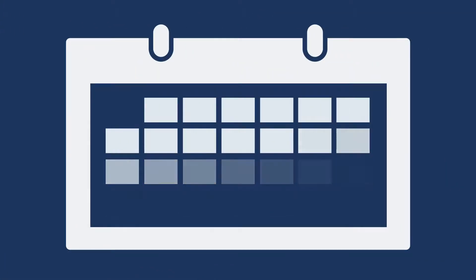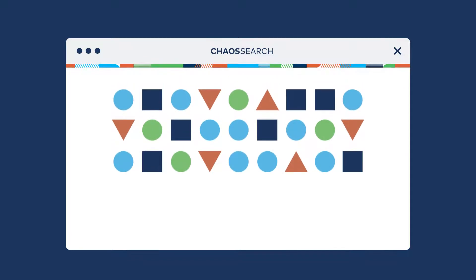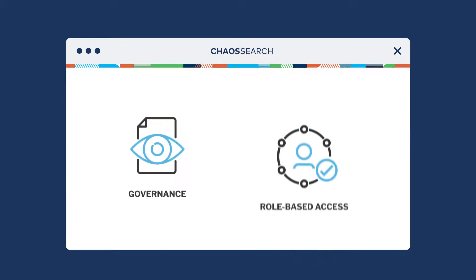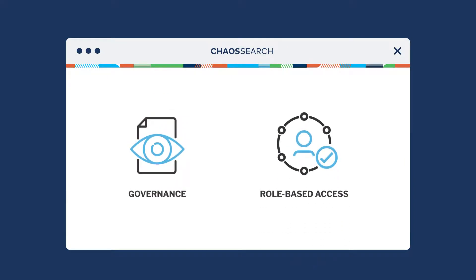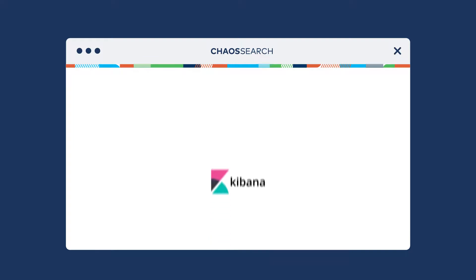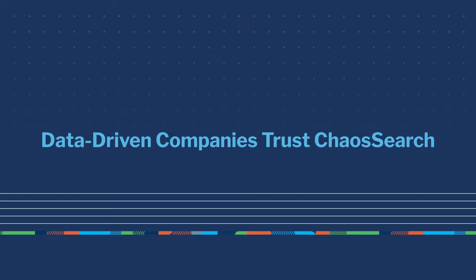ChaosSearch eliminates data movement and reduces data prep time from weeks to minutes through virtual views presented to data consumers via open APIs — search, SQL, and machine learning — with full governance and role-based access controls. Users continue working in the tools they know and trust, such as Kibana, Looker, and Tableau.